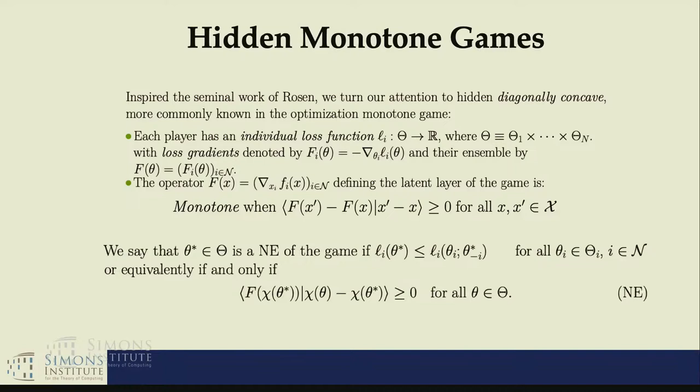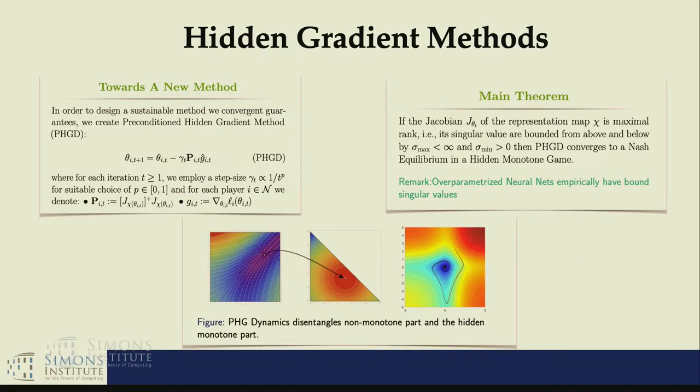Then we created a method recently that we call Hidden GDA. The whole idea can work for any hidden monotone game. This is a different kind of generalization of monotone games. If you go to the optimization landscape they see monotone games and say let's make it a little bit less in the accuracy of the inequalities. Here what I say is I want to solve a monotone game but I don't control the x parameters, I control only the theta parameters and x is my neural net. The solution we gave was a method we call preconditioned hidden gradient method. It's more or less a new understanding of what we call natural gradient.